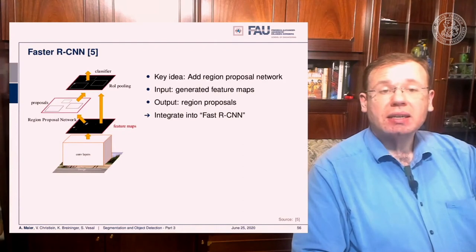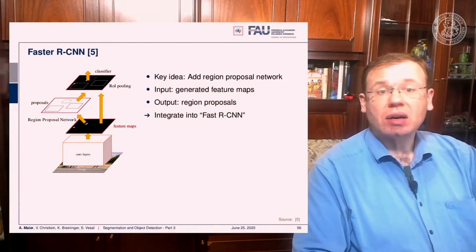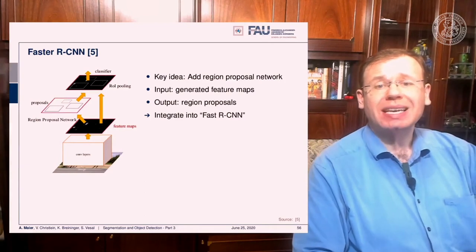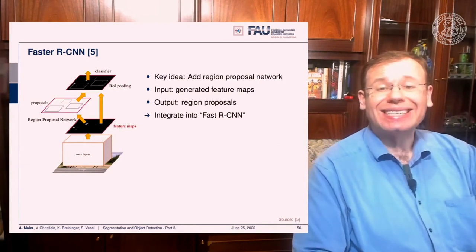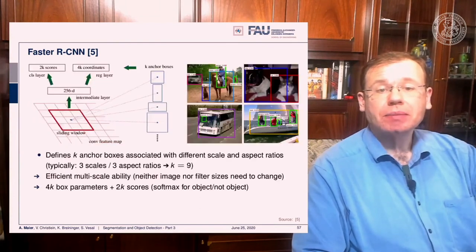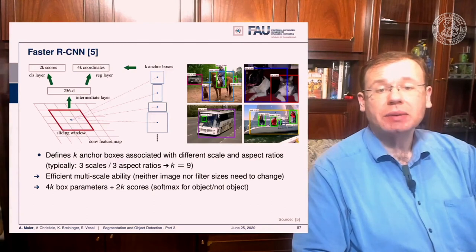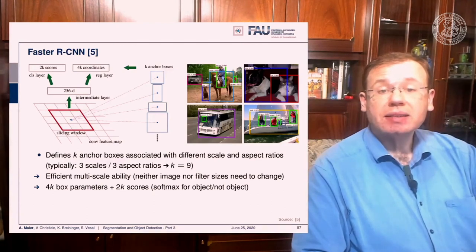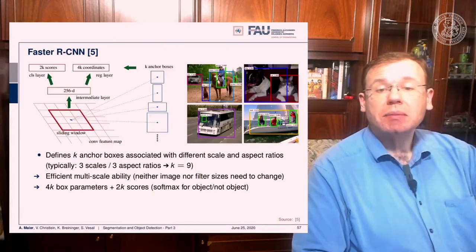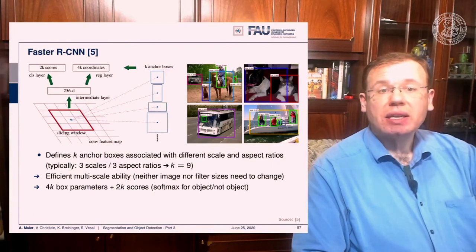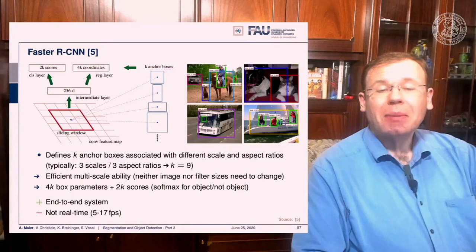To speed things up further, Faster RCNN adds a region proposal network where the input is the generated feature maps and the output is region proposals, integrated into Fast RCNN. Anchor boxes with different scales and aspect ratios — typically three scales and three aspect ratios — enable efficient multi-scaling without changing image or filter sizes. This yields around 4000 box parameters plus 2000 scores from the softmax for object vs. non-object detection, resulting in a fully convolutional end-to-end system, though still not real time.